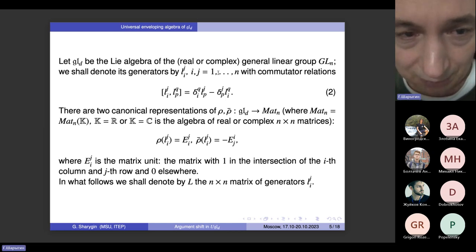There are two standard representations of this algebra. One is given by sending the generator L_ij to the matrix unit E_ij. The other one is conjugated, which sends L_ij to minus E_ji. But so far this is well known.